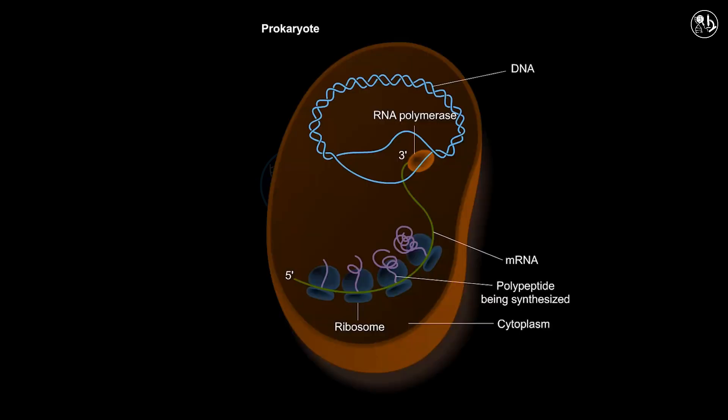In prokaryotes, the mRNA is ready for translation as soon as it is transcribed from DNA. There is no need for any further modifications. Prokaryotes do not have a nucleus, so the mRNA can be translated by the ribosome in the cytoplasm while it is still being transcribed by the RNA polymerase. This means that transcription and translation happen at the same time in prokaryotes.